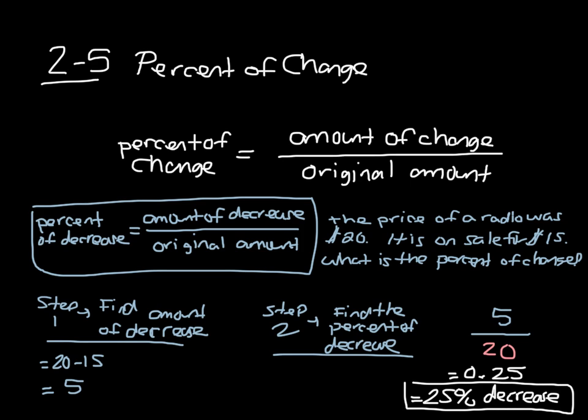So in summary, to find our percent of change, we're looking for our amount of change, whether it's an increase or decrease, and dividing it by the original amount.